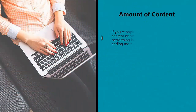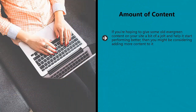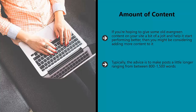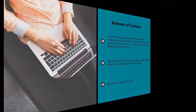Amount of content. If you're hoping to give some old evergreen content on your site a bit of a jolt and help it start performing better, then you might be considering adding more content to it. Typically, the advice is to make posts a little longer, ranging from between 800 to 1,500 words. But that isn't always the case — so again, before you spend a huge amount of time bulking up those old posts, try doing it with just a few and see if it actually helps.